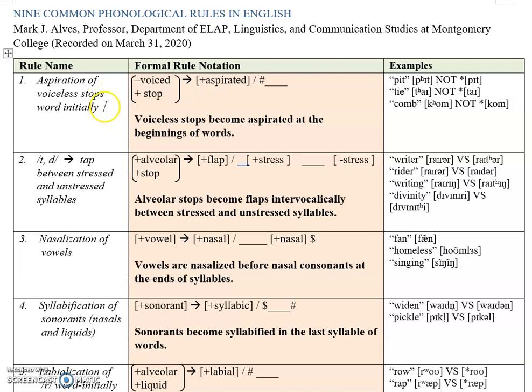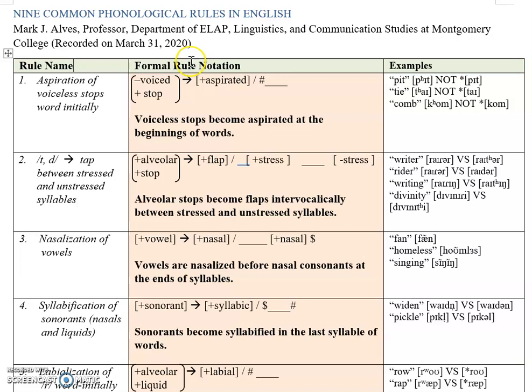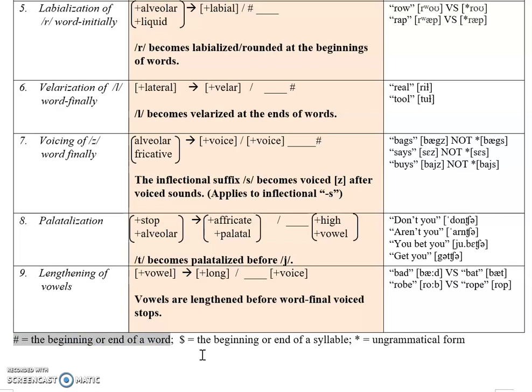In this table you can see the rule name — and by 'rule' we're talking about descriptive rules, not prescriptive rules in a grammar book. These are things that just tend to happen, or always happen in some cases, when speakers produce sounds. In one column we have the formal rule notation, a basic description in an English sentence, and then some samples. Symbols used include the hashtag for the beginning or end of a word, the dollar sign for the beginning or end of a syllable, and an asterisk for ungrammatical forms — meaning that is not what we actually produce in English speech.